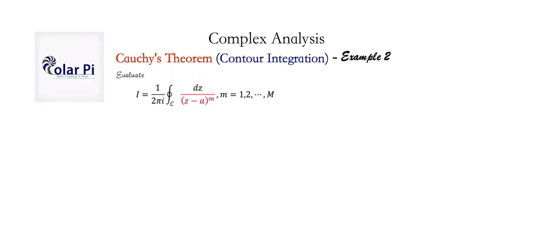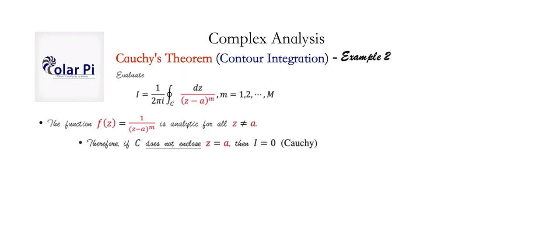We're going to use Cauchy's theorem. First, if the contour C does not enclose z equals a, then we know by Cauchy's theorem the integral is going to be equal to 0. That's because the function f(z) = 1/(z−a)^m is analytic for all z not equal to a — it is differentiable there. So if the contour doesn't enclose z equals a, then f(z) will be analytic on and inside that contour, and therefore by Cauchy we know the integral is equal to 0. We proved Cauchy's theorem in example 0, so check that out.